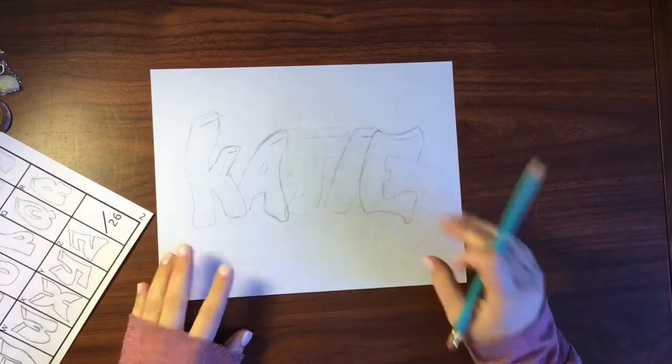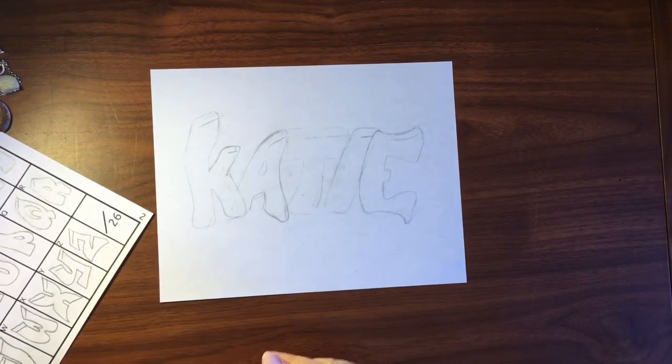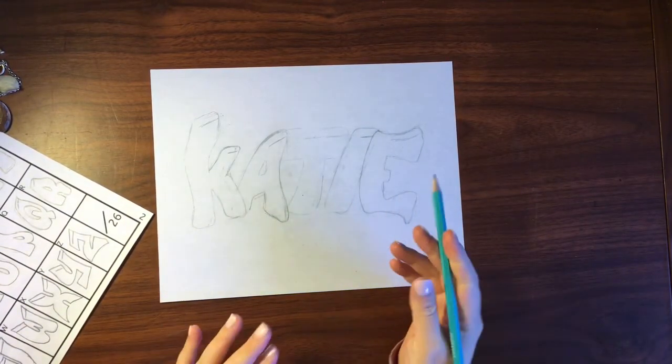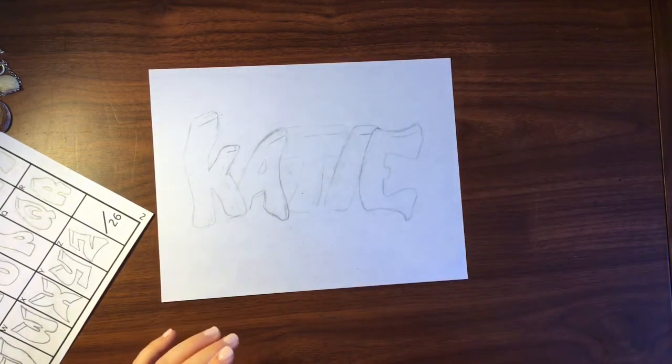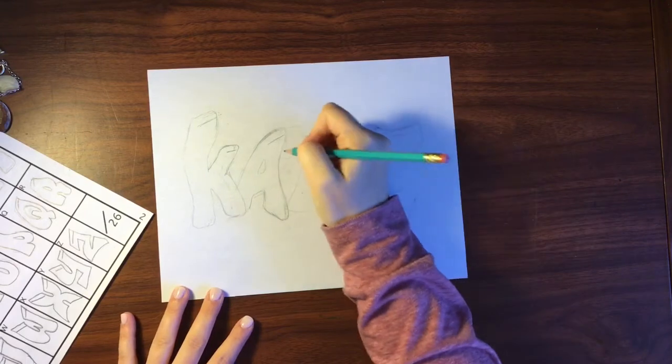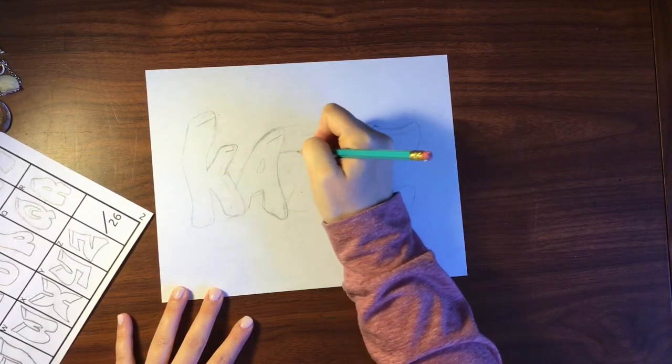Okay, now that I have my letters kind of laid out, I'm just going to look at it and see if there's anything that I feel like needs to be adjusted. I think that the top of my T looks maybe a little bit too thick, so I'm just going to go ahead right now and I'm just going to bring that up a little bit.